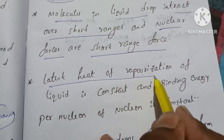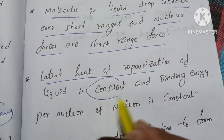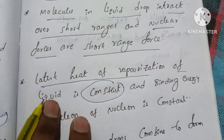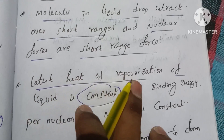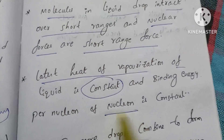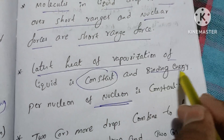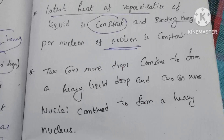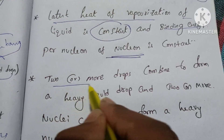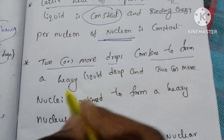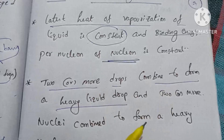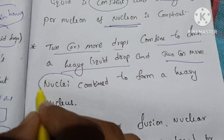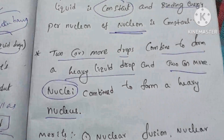The latent heat of vaporization of a liquid is constant. Similarly, the binding energy per nucleon in the nucleus is constant. Finally, two or more drops combine to form a heavy liquid drop. Similarly, two or more nuclei can combine — this corresponds to nuclear fusion.